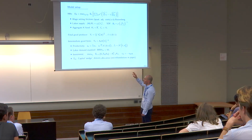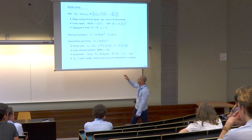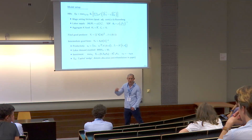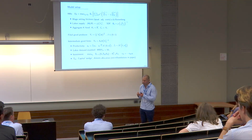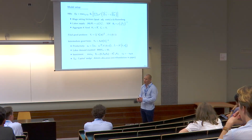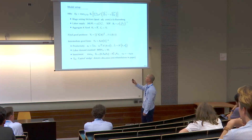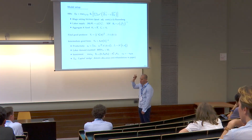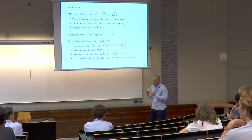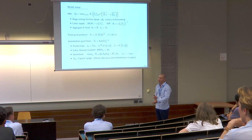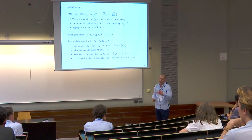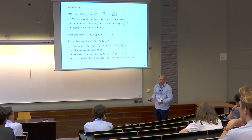If tau lambda A was negative, the wedge would be pro-cyclical, mitigating movements in the discount factor, and agents would be acting inefficiently risk-loving. It turns out the empirically relevant case is a counter-cyclical wedge — meaning it looks like there's too much risk in the world, people are acting too risk-averse. One way to think about it is a high equity premium, which is pretty hard to explain with our models.